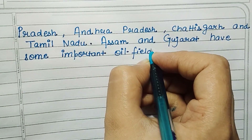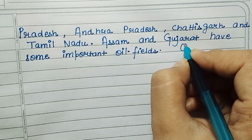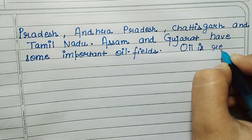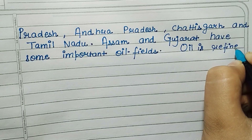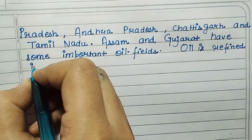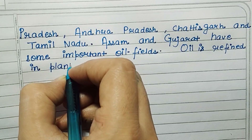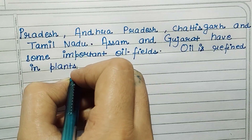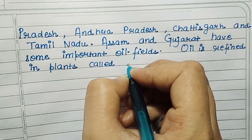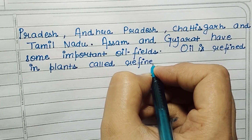Assam and Gujarat have some important oil fields. Oil is refined in plants called refineries.